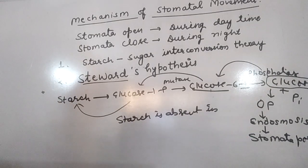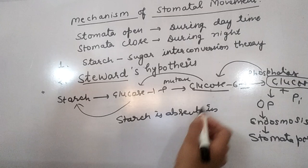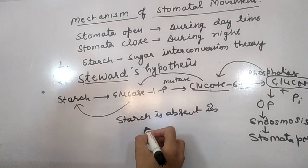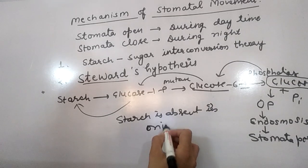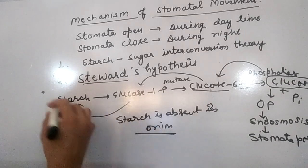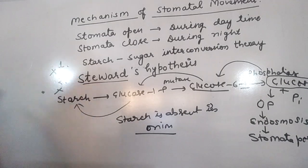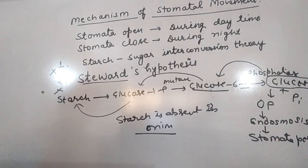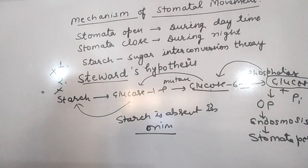Stewart's theory had the same objection as Sayre's: starch is absent in some monocots like onion. Therefore, stomata can still open and close even where starch is absent, and so this theory was also not completely accepted.